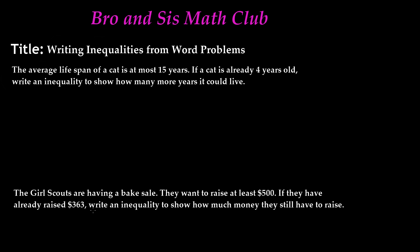So it is either going to be 15 years or below. The symbol we use when the keyword is 'at most' is less than or equal to. Most of us would say it should be greater than or equal to, but it's actually the opposite. At most means it has to be less than 15 or equal to 15 — so it's less than or equal to 15.